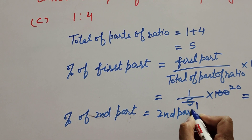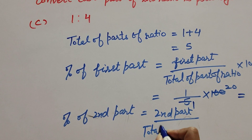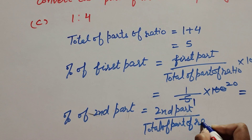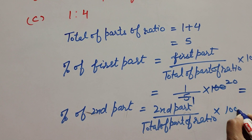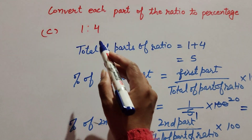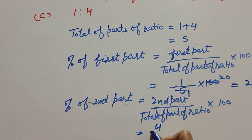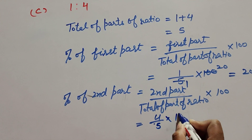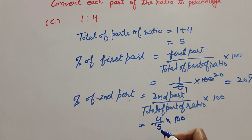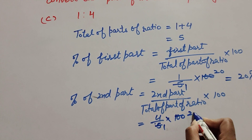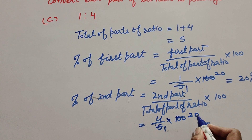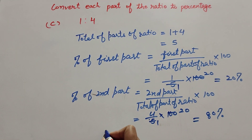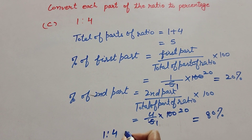Now we find the percent of the second part. It is equal to second part over total of parts of ratio, multiplied by 100. The second part is 4, total of parts of ratio is 5, multiplied by 100. 100 and 5 are both divisible by 5, so we cancel them — 4 multiplied by 20 is equal to 80 percent. So percent of second part equals 80 percent.